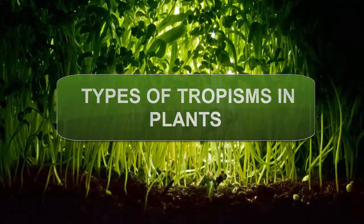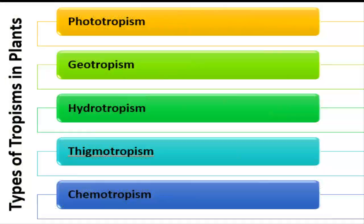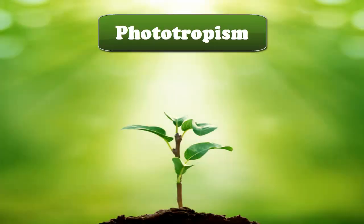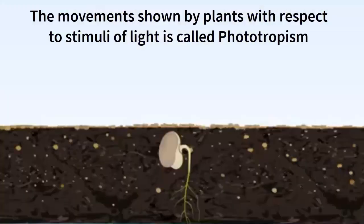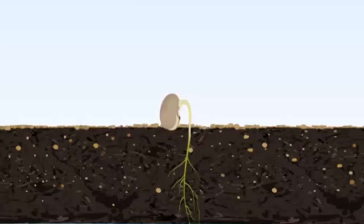Types of Tropism in Plants. The term tropism refers to a plant's biological ability to move by itself in response to various forms of external stimuli. The types of tropism in plants are: Phototropism, Geotropism, Hydrotropism, Thigmotropism, and Chemotropism. Phototropism: the movements shown by plants with respect to the stimuli of light is called phototropism.